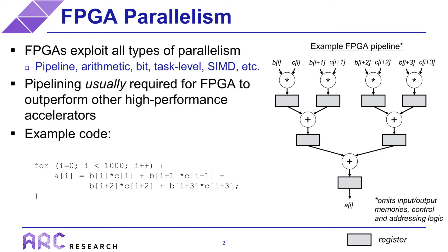In the most common case, these operations are arithmetic operations, but you can also create pipelines at arbitrary levels of abstraction, which then often becomes referred to as task-level parallelism. Generally, pipelining is a form of task-level parallelism where the individual tasks synchronize every cycle. Task-level parallelism in general usually includes buffers in between the tasks because of more irregular communication between them, but that is outside the scope of this talk.